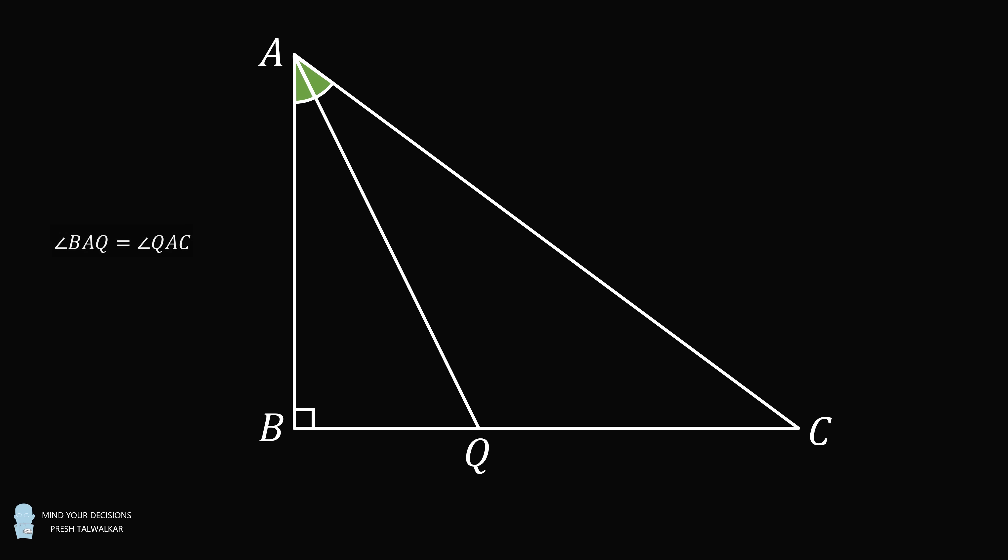Hey, this is Preshtal-Walker. ABC is a triangle with a right angle at B. Let AQ be the angle bisector of A, and let AQ have length equal to 9. Let CP be the angle bisector of C, with length equal to 8 root 2. The question is, what is the length of AC, the hypotenuse of the triangle?